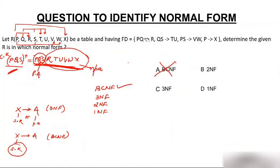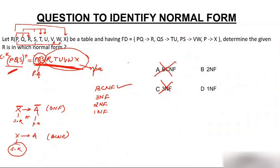Since the table is not in BCNF, let's check 3NF. For 3NF, for every non-trivial dependency X→A, either X must be a super key or A must be a prime attribute. For PQ→R: PQ is not a super key, and R is a non-prime attribute. So this functional dependency is not in 3NF, and therefore the entire table is not in 3NF.